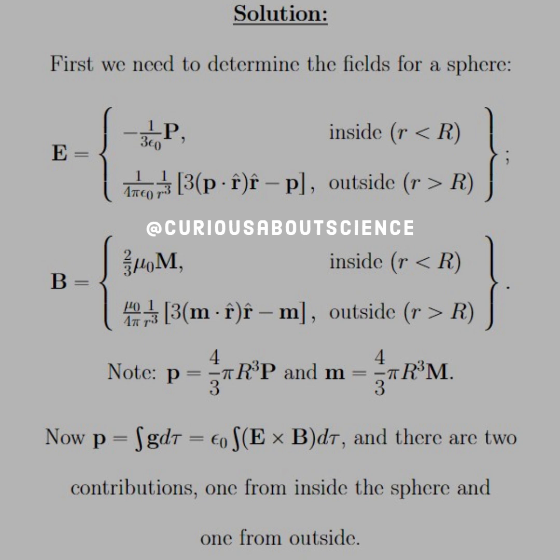Our solution is, well, we first need to determine the fields of the sphere. So if we're just inside, we know that the field of a polarized object is negative 1 over 3 epsilon-not P, and then for outside we have 1 over 4 pi epsilon-not, 1 over R cubed, very reminiscent of the point charge configuration. But here, in the coordinate-free form, we have 3 times P dot R hat, R hat minus P.